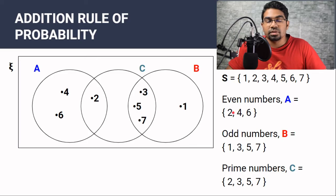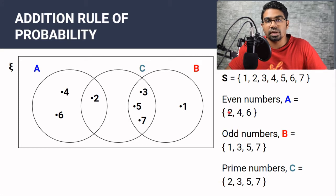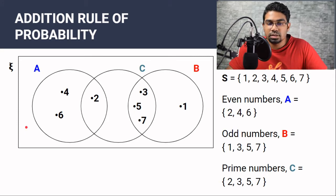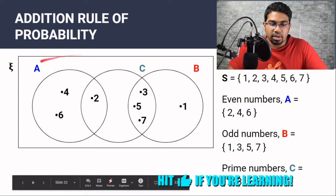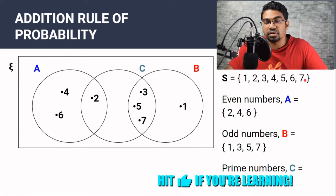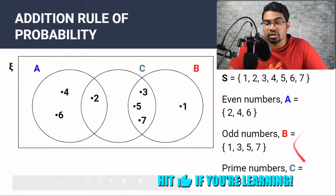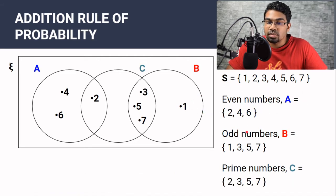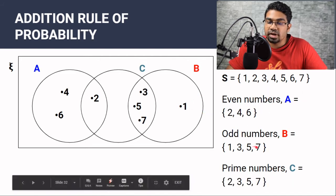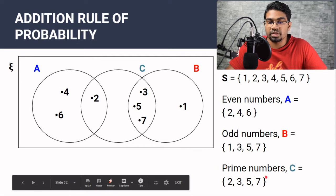If you haven't watched the video on mutually exclusive and non-mutually exclusive events, the video link is at the corner. This is the same example I used in that video. In this sample space we have numbers 1 to 7 and 3 separate events. Event A is even numbers: 2, 4, and 6. Event B is odd numbers: 1, 3, 5, and 7. And Event C is prime numbers: 2, 3, 5, and 7.